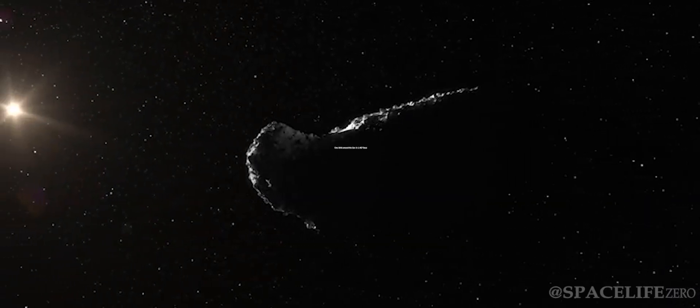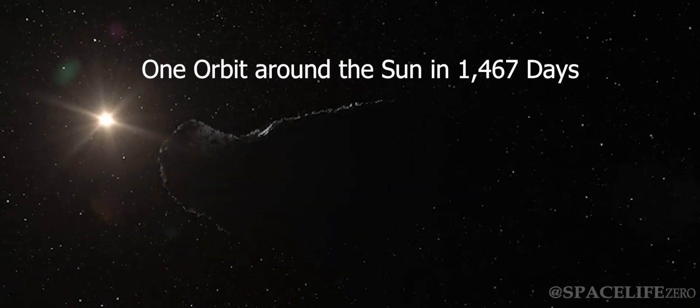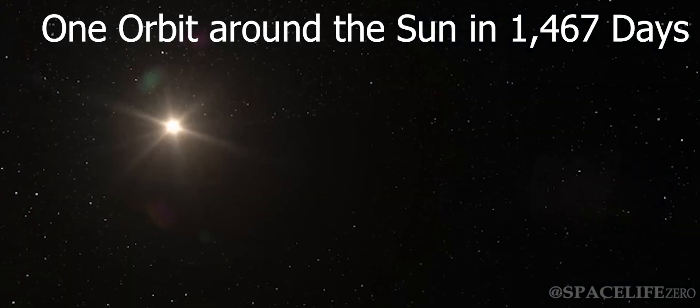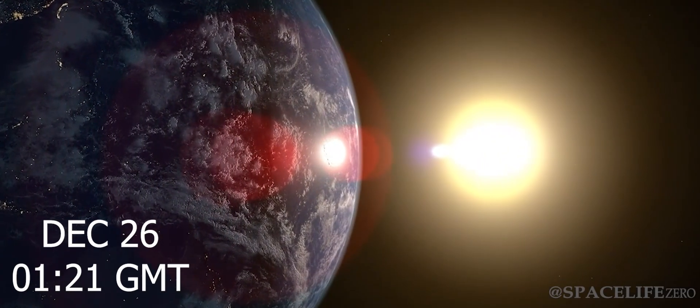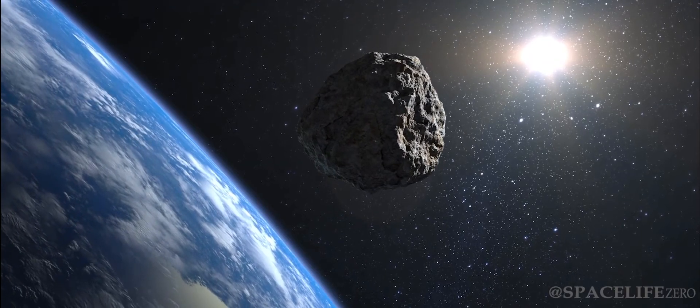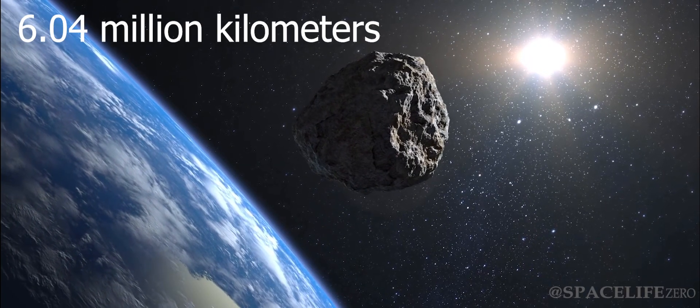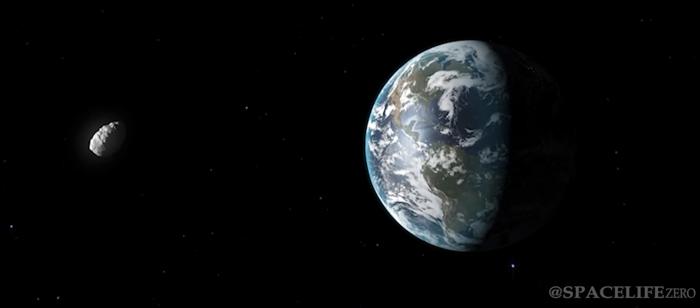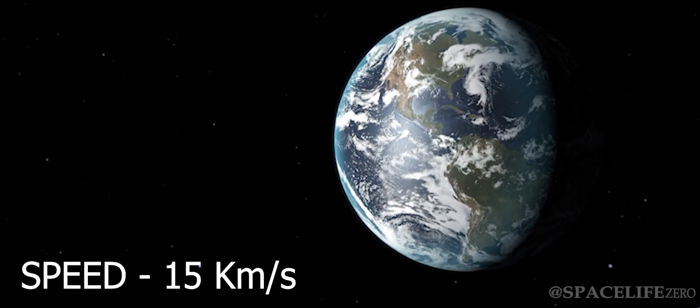It makes one orbit around the Sun in 1467 days. On December 26 at 121 GMT, it will fly past Earth at a close distance of 6.04 million kilometers, at an incredible speed of 15 kilometers per second.